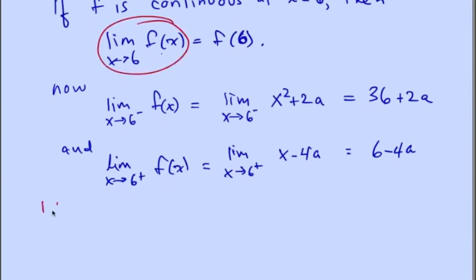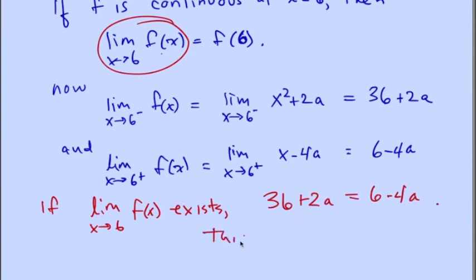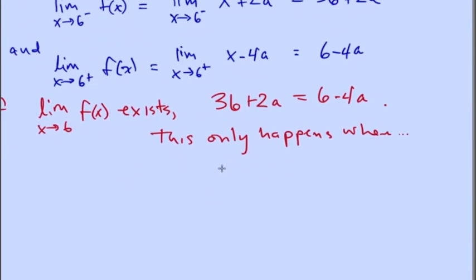Use the definition of the function to find those one-sided limits. If the limit as x goes to 6 of f(x) exists, then the one-sided limits must be equal: 36 plus 2a must equal 6 minus 4a. This only happens when a equals negative 5.